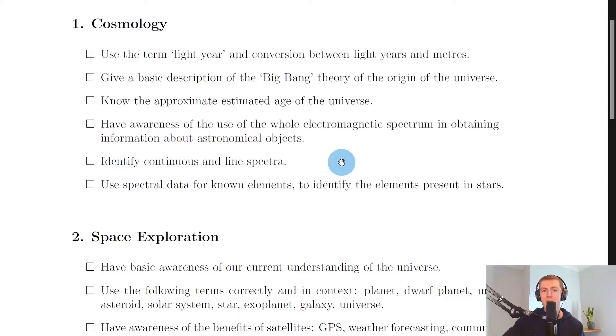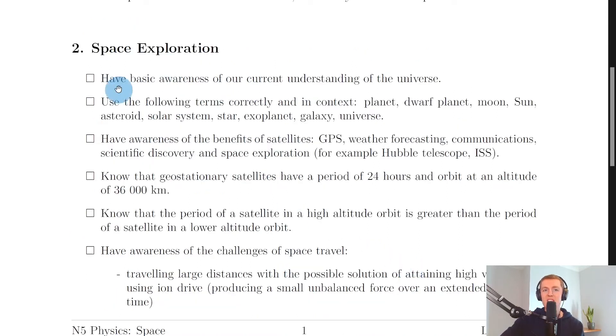Whereas line emission spectra are sort of the opposite—you'll see just an entirely black band with particular lines or bands of different colors of light corresponding to different wavelengths. And lastly for section one, you need to be able to use spectral data for known elements to identify the elements present in stars. That means using line spectra to compare different spectra and match up the lines with those present in the spectrum for a star. Remember, we've done this in the worked example video for stars and spectra.